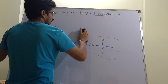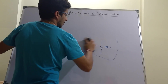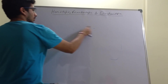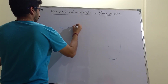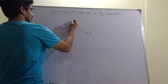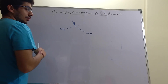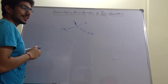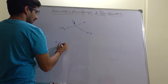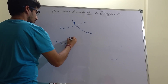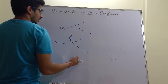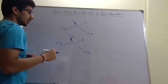Now let's talk about enantiotopic protons, using the example of ethanol. We have a CH3-CH2-OH molecule with one hydrogen above the plane and one hydrogen below the plane. Again we do the same substitution test — replace one hydrogen by chlorine to get one compound, and replace the other hydrogen by chlorine to get a second compound.